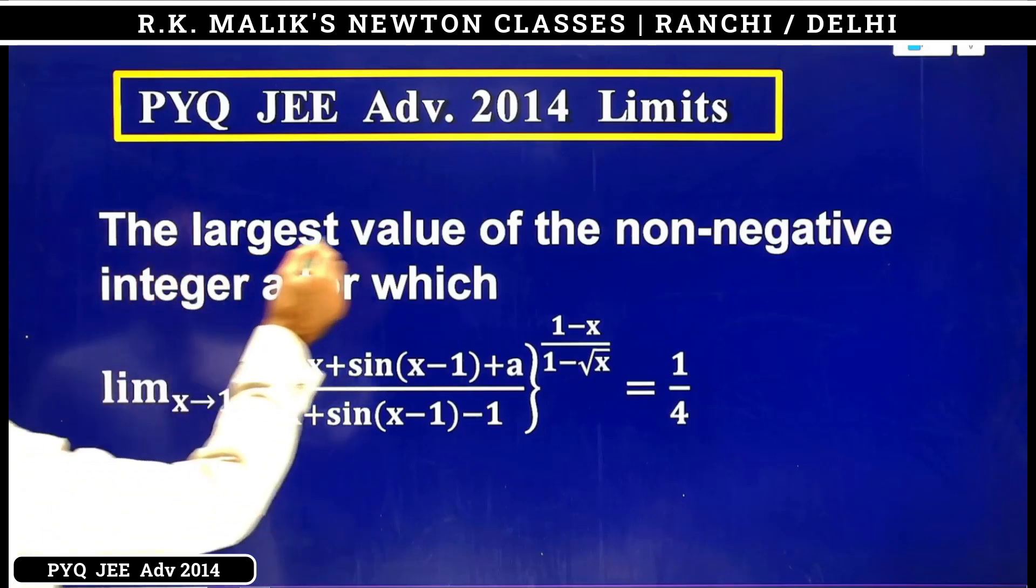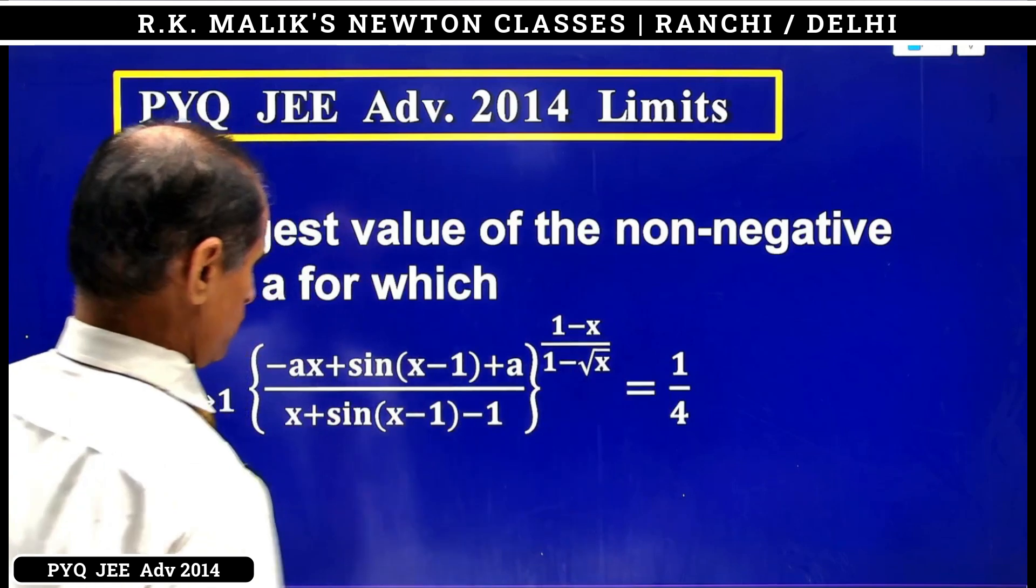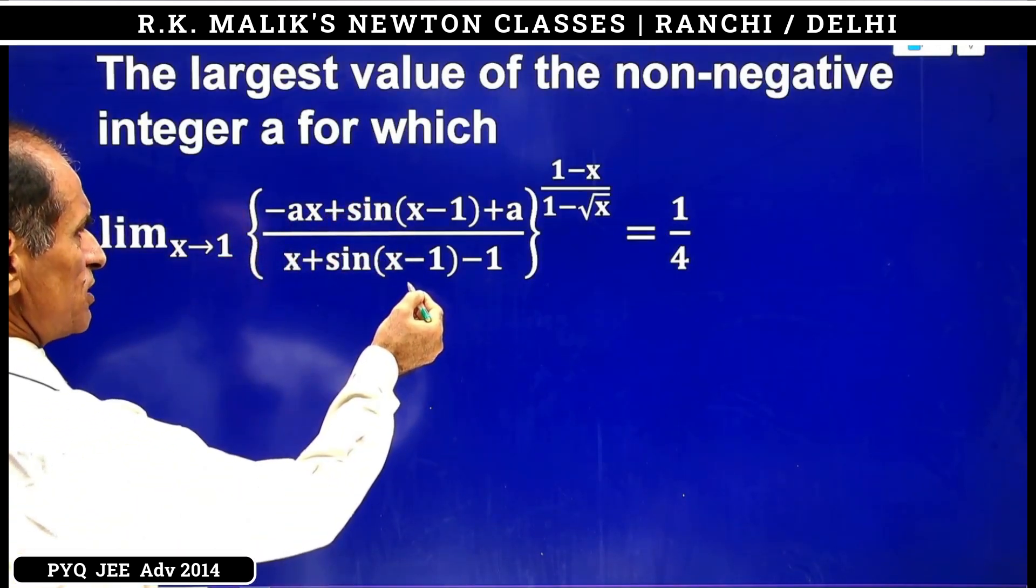In this question you have to find the largest value of the non-negative integer a for which the limit equals 1 by 4. It is clear that if we divide numerator and denominator by x minus 1...